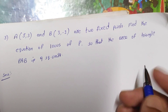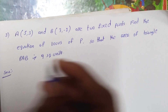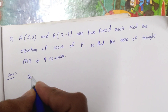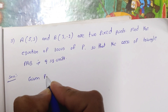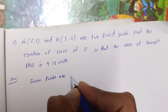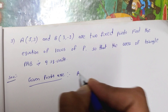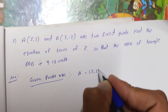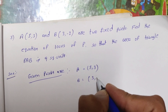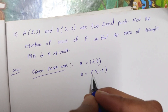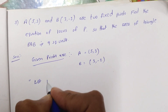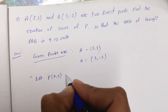First thing first, we will talk about the given points. Given points: A is equal to (5,3) and B is equal to (3,-2). So next, a very important step in the locus — let P be the point (x,y) on the locus.